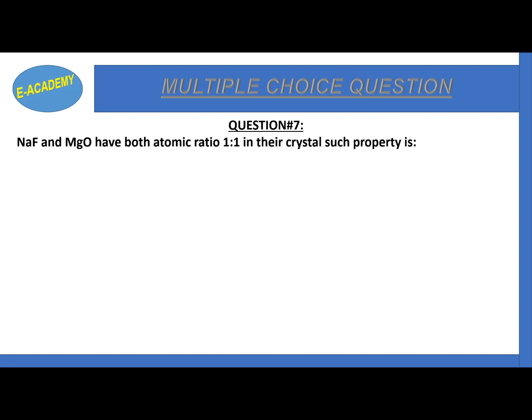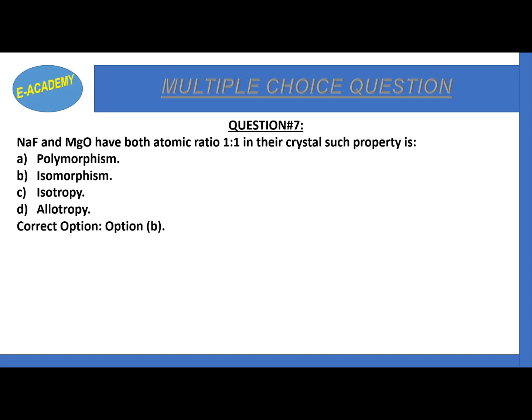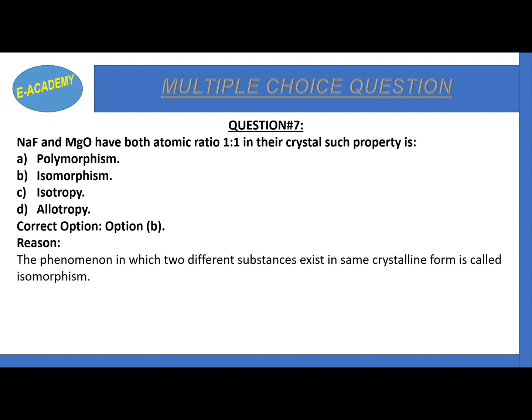Question number 7: Sodium chloride and magnesium oxide both have atomic ratio 1:1 in their crystal. Such property is polymorphism, isomorphism, isotropy, or allotropy? The correct option is B: isomorphism. The phenomenon in which two different substances exist in the same crystalline form is called isomorphism.